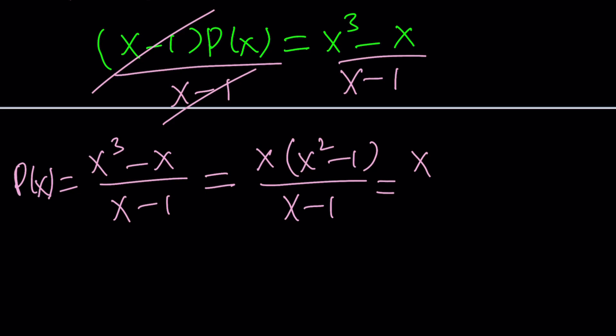And x squared minus 1 happens to be difference of two squares. Did you know that? It's a very important formula. I would say difference of two squares and Pythagorean theorem are two very important things in math. x squared minus 1 can be factored into x plus 1 and x minus 1. And then we can divide by x minus 1. Now, cancel out x minus 1. Ta-da!